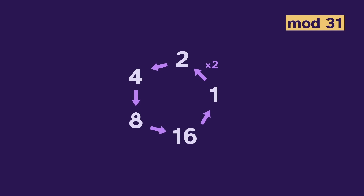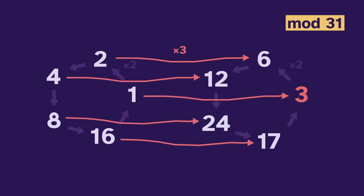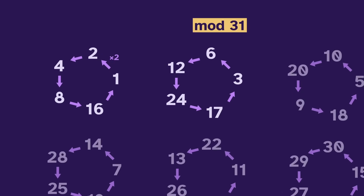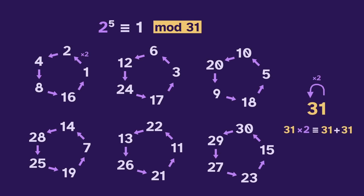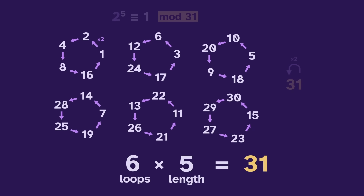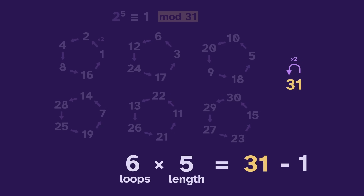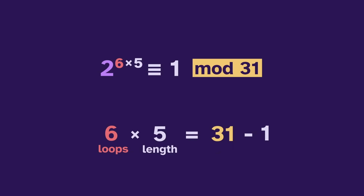And it's not just the powers. If we start at 3, and then multiply by 2 five times, we also get a loop of length 5 — we've basically just tripled everything in the original loop. This looping happens in general: for any starting number, we get a loop of length 5, because 2 to the 5 is 1 mod 31. The only exception is 31 itself. So these 6 loops of length 5 contain all 31 values, with one exception. We know that 2 to the 5 equals 1, so we can raise both sides to the 6th power, and we have 2 to the 31 is 2 mod 31. It follows Fermat's Little Theorem.